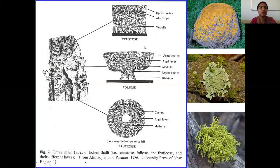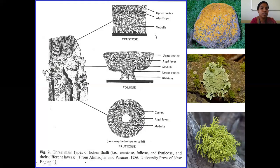This is how the sections of crustose, foliose, and fructicose lichen look like. If you take the section of crustose lichen, it has an upper cortex but the lower cortex is absent — that's why the name is given 'crustose' — it does not have a lower surface. In between it has the medullary region containing the algal cells.